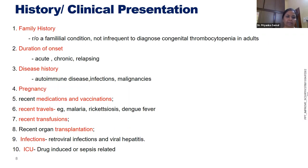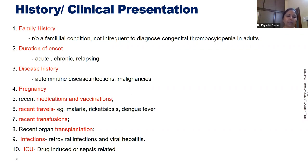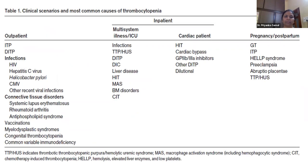Also consider pregnancy, recent medications, vaccinations, travel to endemic areas for malaria, rickettsial infections, or dengue fever. Recent transfusions — post-transfusion purpura is transfusion-related. Organ transplantation, be it hematopoietic stem cell or solid organ transplant; HIV or viral hepatitis infections; and ICU thrombocytopenia itself is a great topic which we need to discuss.